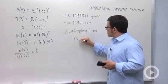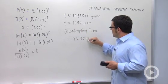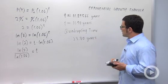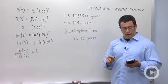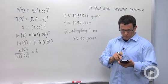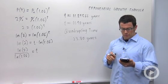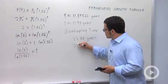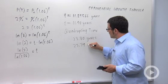But if I write 23.80 years, my answer's not quite right. Let me multiply on my calculator. Answer times 2. It's actually 23.79 years.